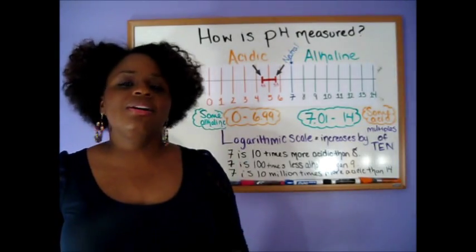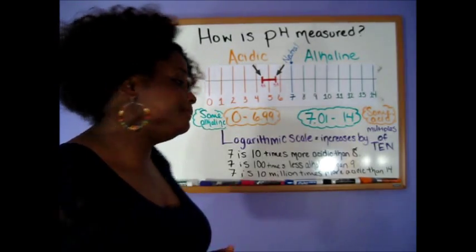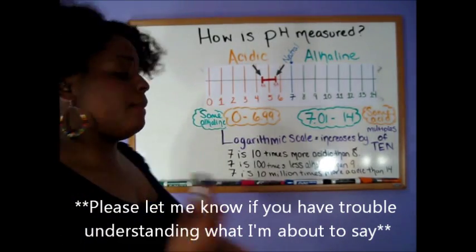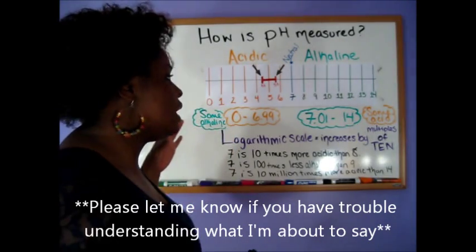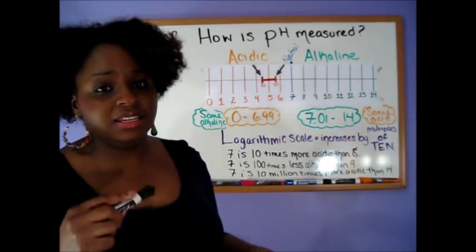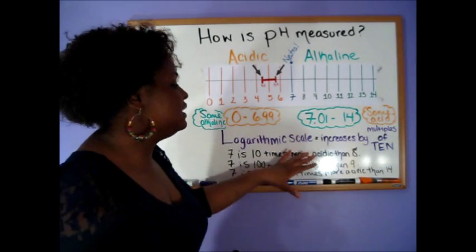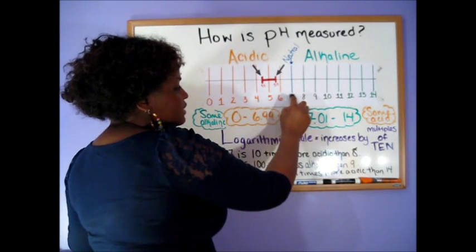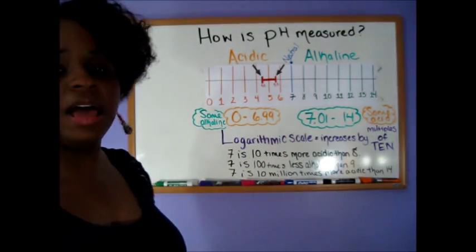So the pH scale is on a logarithmic scale, which means that it increases by multiples of 10. Now I'm going to give you an example of what I mean by multiples of 10. I basically compared 7 to 8 on the logarithmic scale and I compared its acidity. Now I said here that 7 is 10 times more acidic than 8. So since 8 jumps from 7, it basically multiplies by 10.